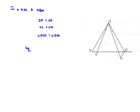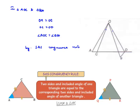Now by SAS congruence rule we can say that both triangles are congruent. That is, triangle AOC is congruent to triangle BOD.